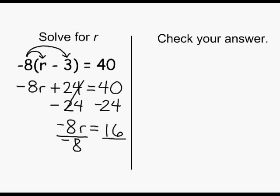To change any number into positive 1, you can simply divide that number by itself. So on the left hand side, we are going to divide negative 8 by negative 8, which will give us positive 1 or positive 1r. And on the right hand side, we are going to divide positive 16 by negative 8.